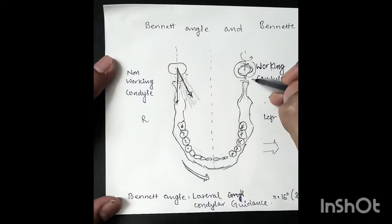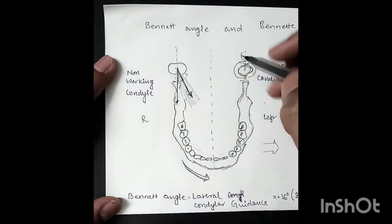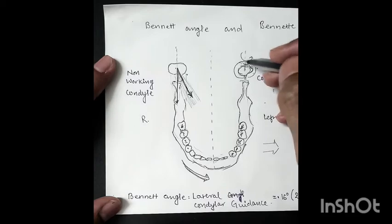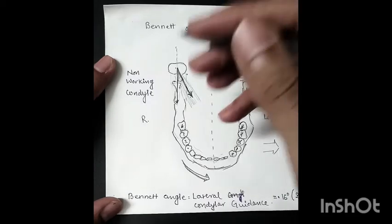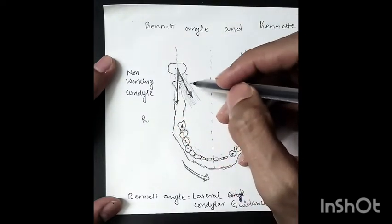The working condyle will rotate on its axis when there is movement of the mandible to the left, and this movement will be because of the lateral pterygoid muscle.